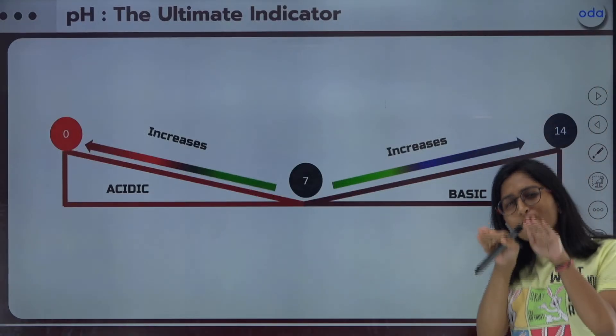Here is a cheat code for you. Seven is the midpoint. When you move towards zero, the acidic strength increases — so pH 0 is more acidic than pH 6. If the pH value is 6 it is less acidic, but if the pH value is 1 it is more acidic. Moving from 7 towards 14, the basic strength increases — so pH 14 is more basic than pH 8. This is the cheat code: lesser the pH, more acidic; greater the pH, more basic.